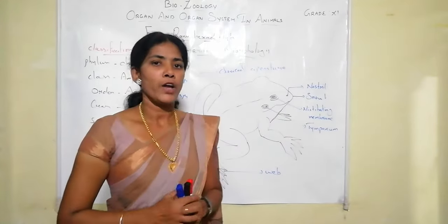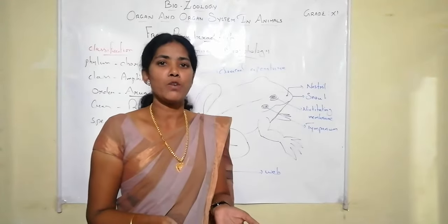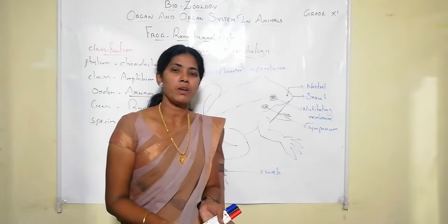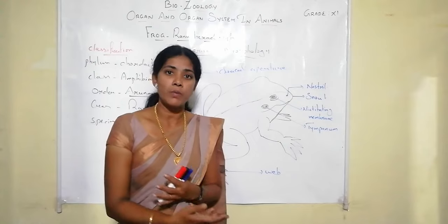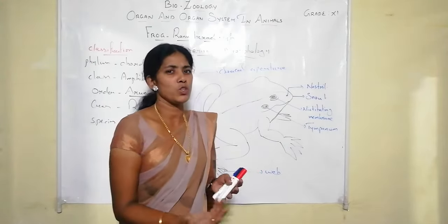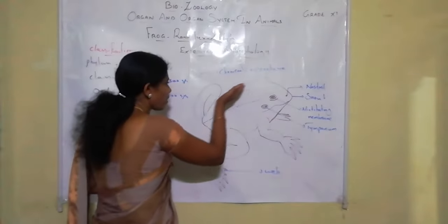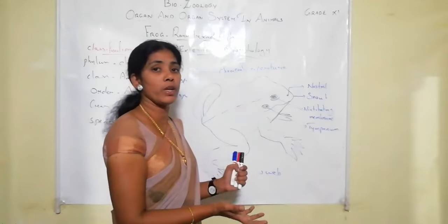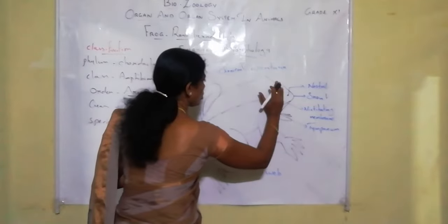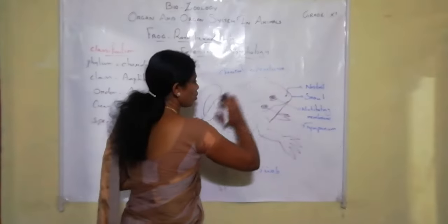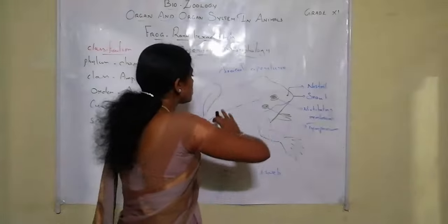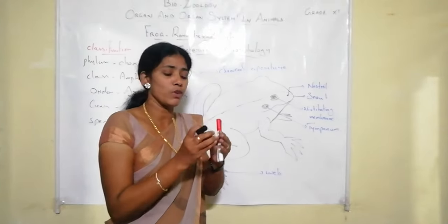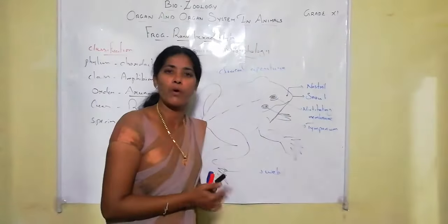Now let us look at the morphological features. Morphology means the external features of the animal. The frog has a streamlined body, which is adaptable for swimming. The color of the dorsal side is dark greenish, while the ventral side is pale green. The body is fully covered with skin that is very smooth, soft, moist, and slimy.